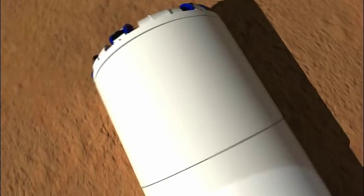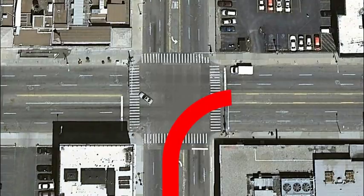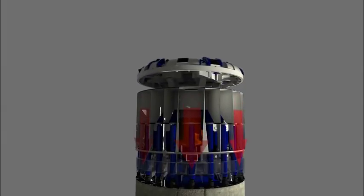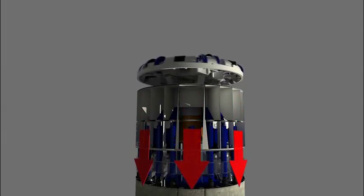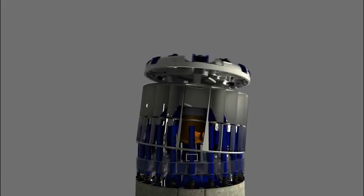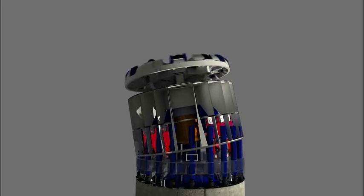Using a process called active articulation, Robbins EPBs can produce tight curves with a radius as small as three to four times the tunnel diameter. Active articulation allows the thrust to be transferred equally to the entire circumference of the segment ring, eliminating the problem of ring deformation. The articulation occurs between the front section and rear section, which are connected by articulation cylinders.